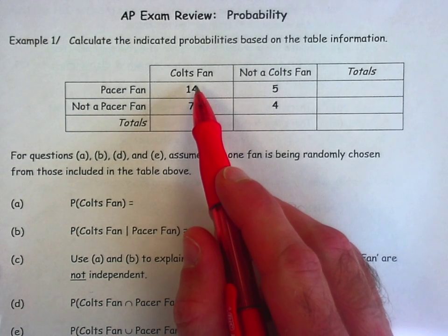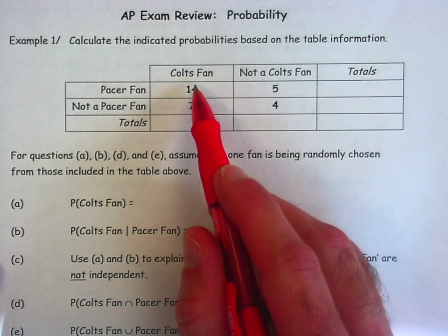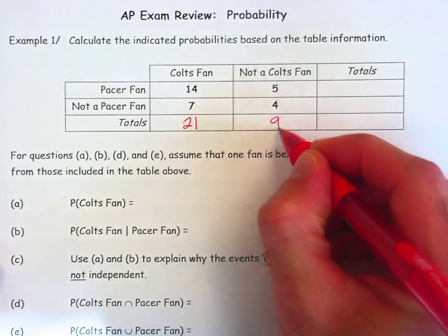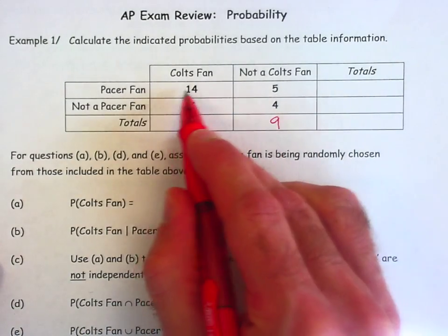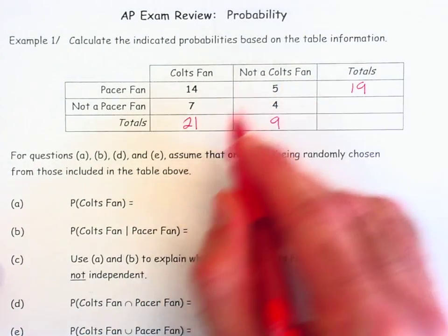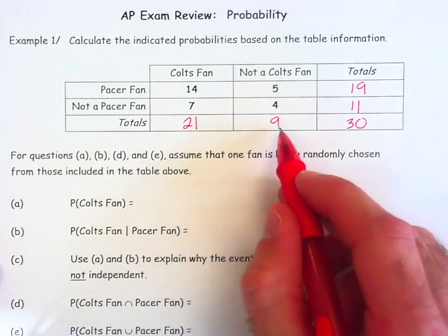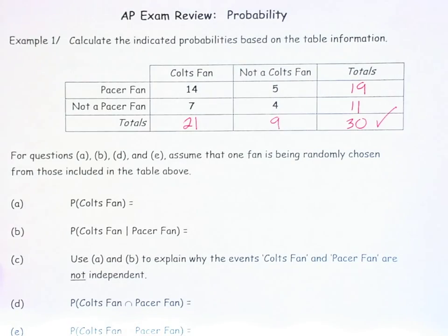So you need to total up your rows and columns in this two-way table. There's a total of 21 Colts fans, a total of 9 subjects who aren't Colts fans. There's a total of 19 Pacer fans and 11 who aren't Pacer fans. So the 19 and 11 makes 30, so does the 21 and the 9. So the table total makes sense.